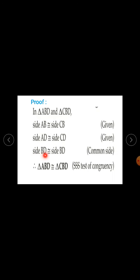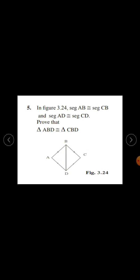Side BD is congruent to side BD — reason is common side. Therefore, these two triangles are congruent. Triangle ABD is congruent to triangle CBD by SSS test.